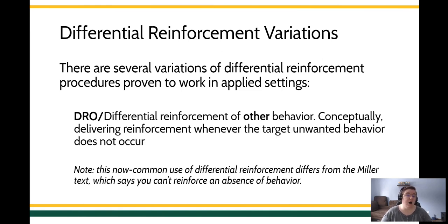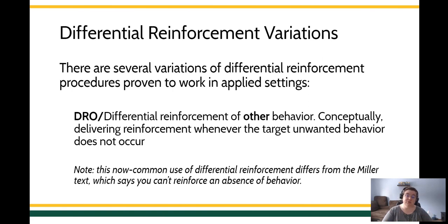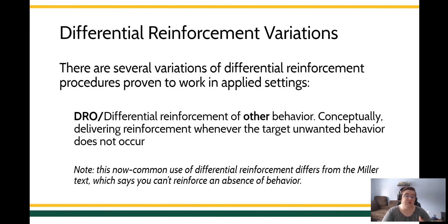We also have something called a DRO procedure. This one can be pretty misleading because we often say you can't reinforce the absence of a response. We have something called the dead man test, which means you can't reinforce a behavior that a dead man can do — things like laying still or being quiet don't pass the dead man test. But DRO is one of those interesting exceptions to that rule. In a DRO procedure, we provide the reinforcer following a brief period of time where a specific target behavior didn't occur. So conceptually, you're providing reinforcement whenever any other response occurred and the target didn't. In the case of a foul-mouthed teenager, maybe we provide a reinforcer for every hour they haven't used adult language. We're just providing a reinforcer based on a period of time when the target response didn't occur.